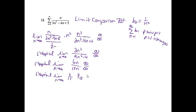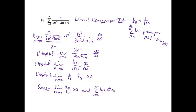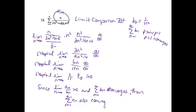We got a limit of 1/3. Since this is a number greater than 0, we know that if b sub n converges, then a sub n also converges. Since the limit as n approaches infinity of a sub n over b sub n is greater than 0 and the series b sub n converges, then the series from n equals 1 to infinity of a sub n also converges.